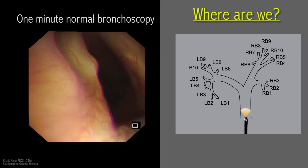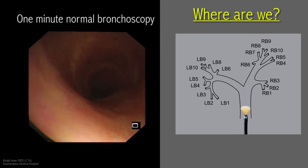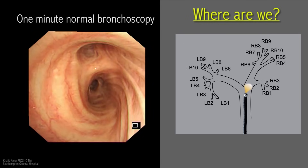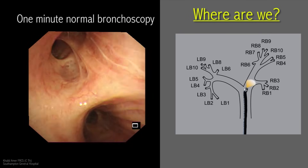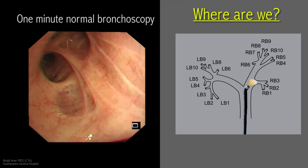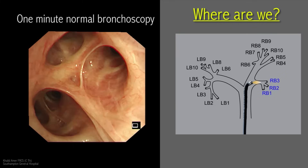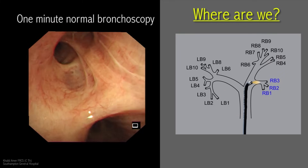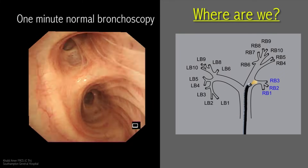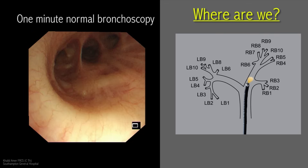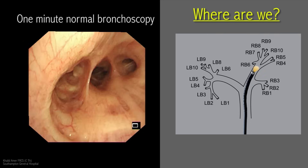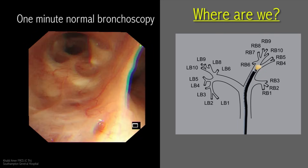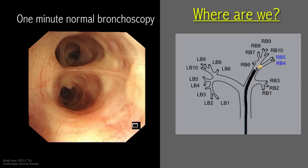The screen will be divided into two halves. The left half with the black background will show the bronchoscopic steps of a continuous clip of normal bronchoscopy, whereas the right grey half of the screen points out what to look for, alternating with a real-time map of the anatomy of what is seen on the left side.